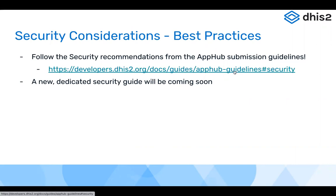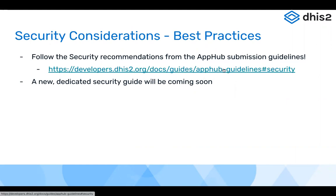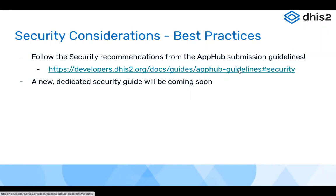There's a guide on developers.dhis2.org — the developer portal for App Hub submission — that has a security section you can find at the link provided. You can also just go to Docs > Guides > App Hub and then go to the security section. There are a lot of recommendations in that guide, some of which pertain to the data store. We'll also be adding more guides and documentation around how to make your applications secure, not just with the data store but other things as well. For now, look at the App Hub guidelines for best practices.